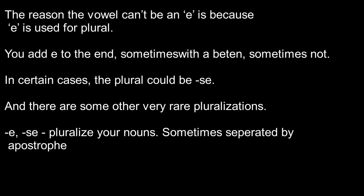E is used for the plural of your root. If you add an E to the end of your root — and sometimes you put a beten between it, which was that apostrophe — you make that root into a plural. In certain cases, the plural will be SE with your apostrophe sometimes. And there are some other rare pluralizations, but I'm not going to go over those in this one. So if you add an E or an SE, that makes it a plural root, and sometimes it's separated by your apostrophe.